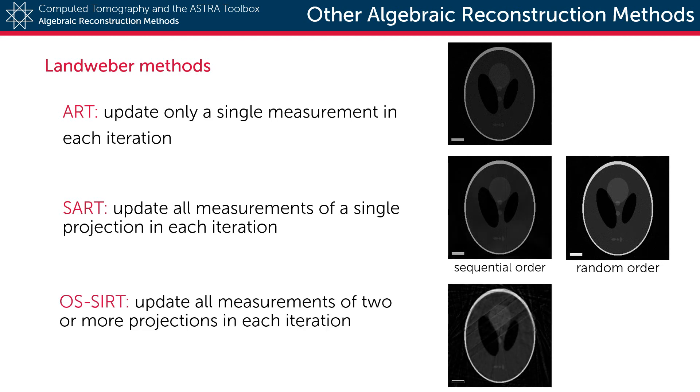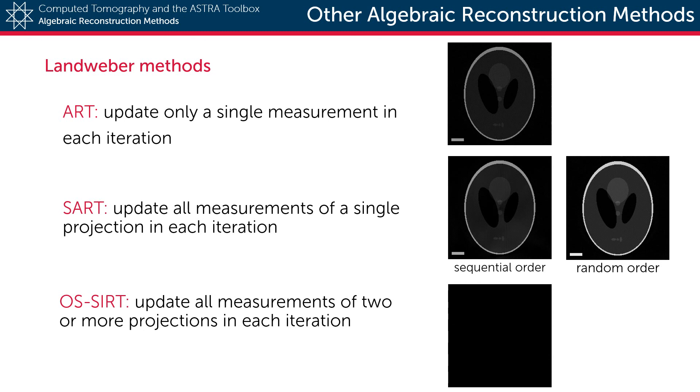Another variation on SART is what we call ordered subset SART, in which two or more projection directions are used in each iteration.